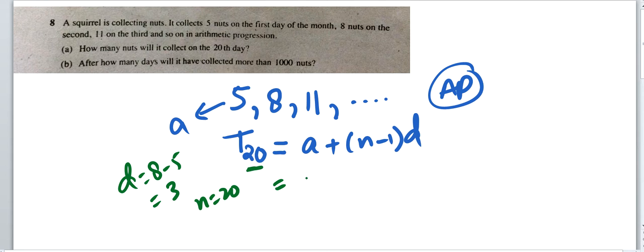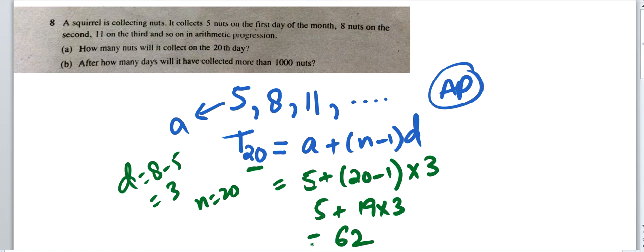So t20 is 5 plus (20 minus 1) times 3. That will be 5 plus 19 times 3. 19 times 3 is 57, plus 5 equals 62. So on the 20th day, the squirrel will collect 62 nuts.